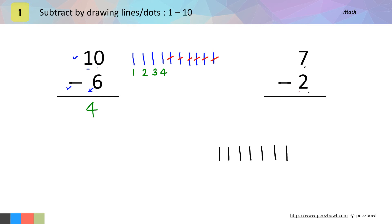As we need to subtract 2 lines, I will cut 2 lines. 1 and 2 lines. Now, I will count rest of the lines. Here we have 1, 2, 3, 4 and 5 lines. That means 7 minus 2 is equal to 5. 5 is the answer.